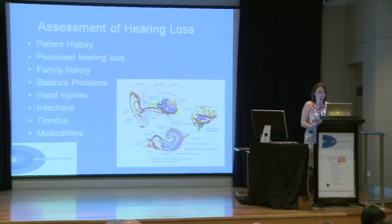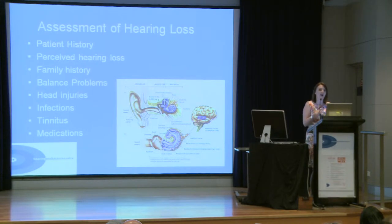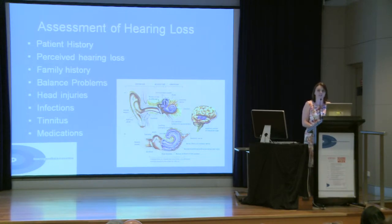When we assess hearing loss, it's not just an audiogram. It's also really important that we take patient histories, which can include things like how you perceive your hearing, because an audiogram tells us part of the story, but where you feel you're having difficulty can also affect what intervention we look at. Whether you have a family history of hearing loss, any difficulty with balance, vertigo attacks or dizziness, any recent head injuries, history of infections, tinnitus, and in some situations what medications you're on can be relevant.